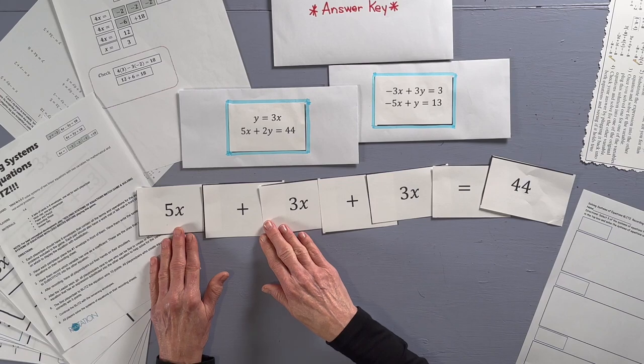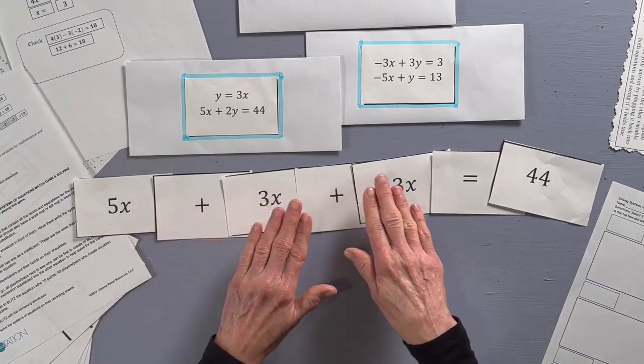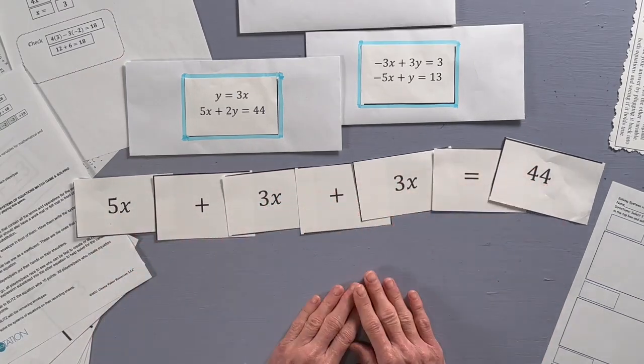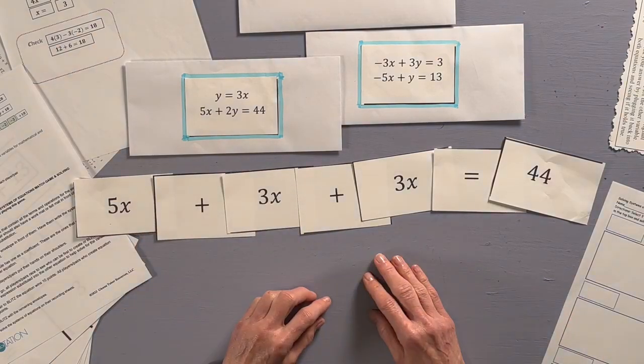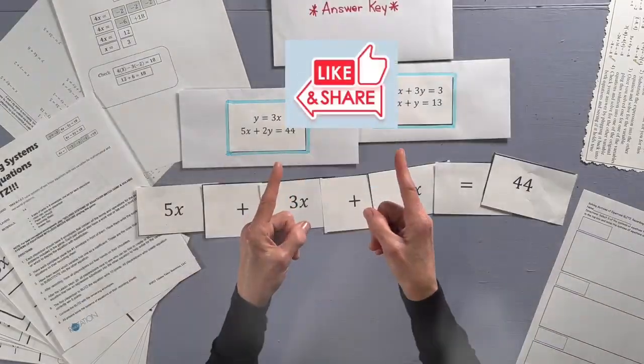You can see already what we're going to do. We're going to combine like terms and then we are going to solve for x and substitute in to solve for y.